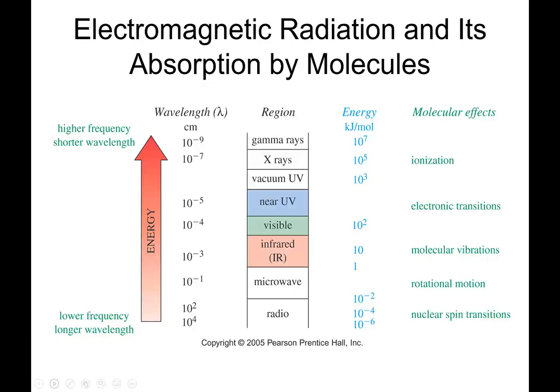So what we're going to use is infrared and radio waves. We could also use visible light if we were measuring the intensity of a solution—you may have done that in general chemistry. If you ever made a concentration versus absorbance plot, you're using visible light—Beer's Law. And UV: maybe when we make our sunscreen, we'll test it not by putting it on our skin but by shining some UV light on it and seeing if it really blocks the light or not. Infrared and radio waves are the ones we'll use the most. Mass spectrometry is different—it doesn't use light.